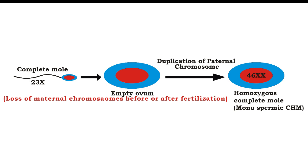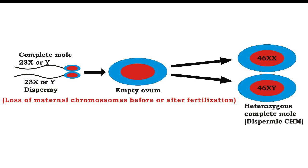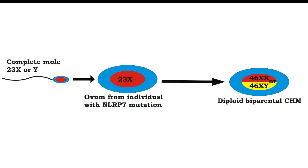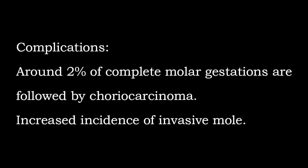There is another condition: the biparental complete hydatidiform mole. In this condition, the sperm contains either 23X or 23Y, and the egg contains 23X, resulting after fertilization in either 46XX or 46XY. However, there is a mutation of the NLRP7 gene, which accounts for recurrent hydatidiform mole in about 55 percent of women. In this condition, there is production of a protein with reduced function, or prevention of any protein production at all, as a result oocytes do not develop normally.